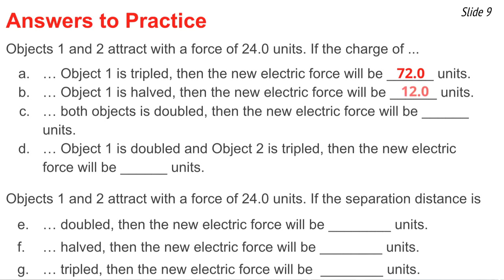The answer to B is 12 units, because if you halve a charge, you will halve the force, and the 24 becomes one-half of what it was. If you were to double both of the charges, then you would quadruple the force.